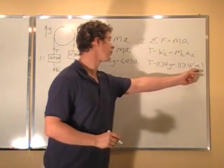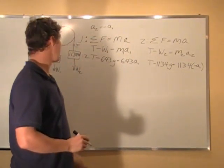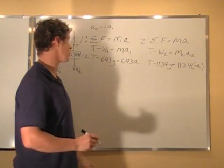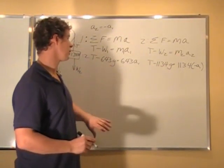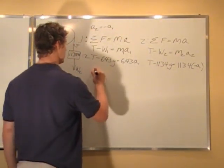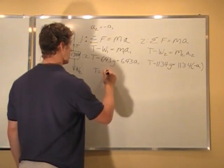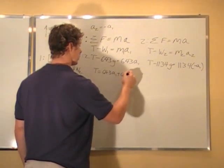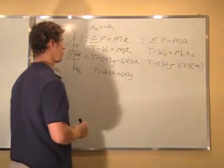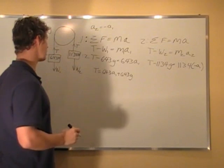I don't know a1. That is what I am looking for. And I don't know t. So what I am going to do, I am just going to solve for t in this equation and plug in here. So I know t is equal to 643 a1 plus 643 g. Just by adding 643 g to the other side.